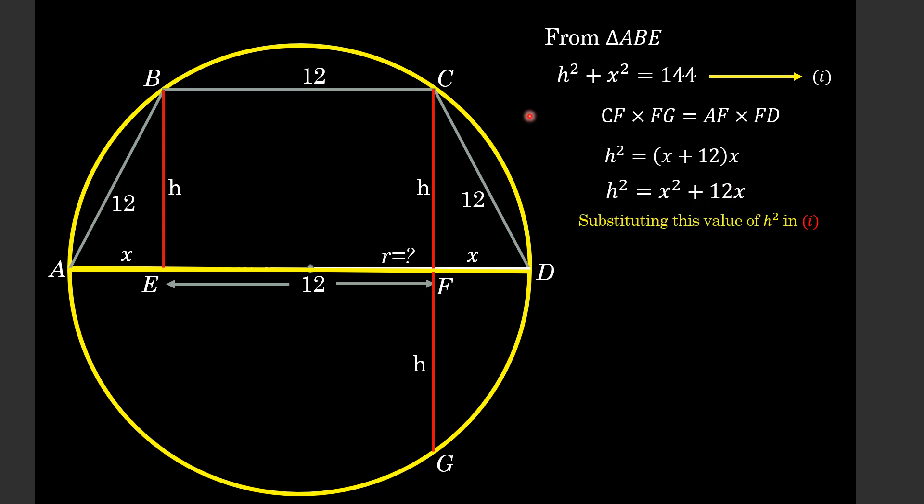Substituting this value in equation number 1, we are going to replace the value of h² in equation number 1. Thus, we get x² + 12x + x² = 144.